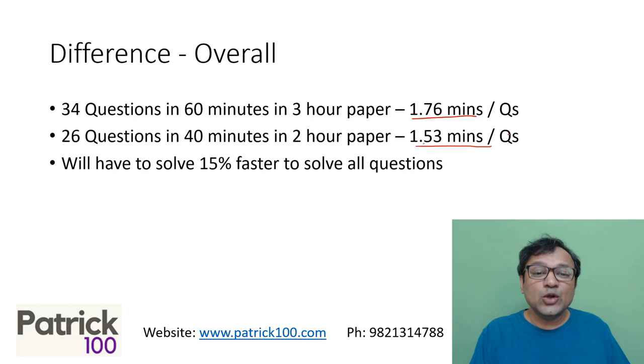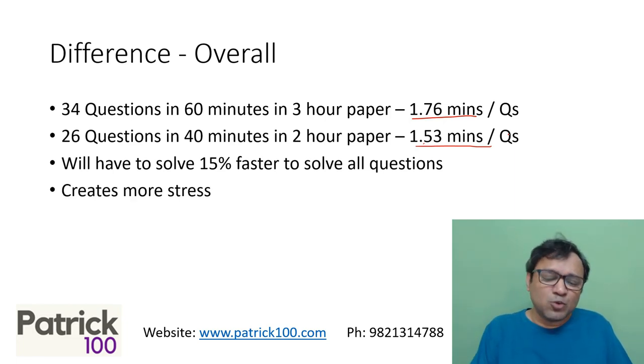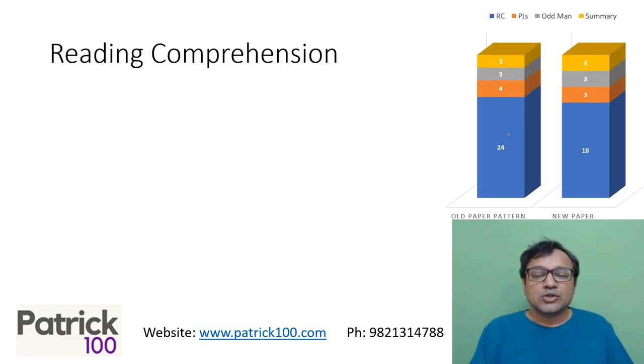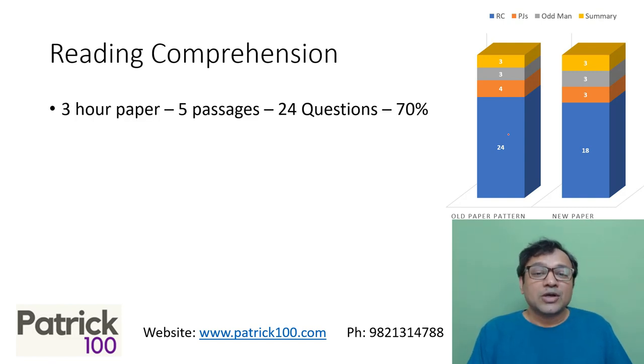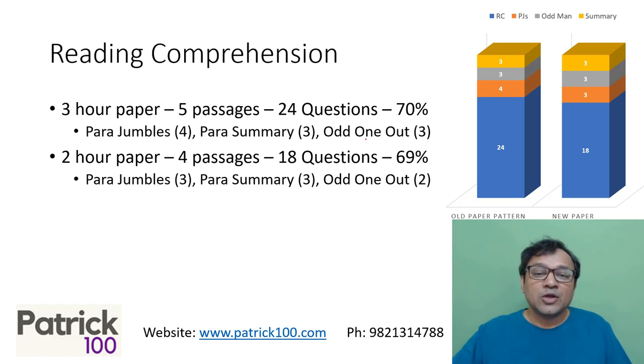Technically, you have more number of questions to solve. If you plan to solve all questions, you have to solve 15 minutes faster, which creates more stress. How do you go about doing it? Let's start with a major portion of the paper, which is reading comprehension. RC still constitutes the major part of the paper—it was 70 percent, now it's 69 percent.